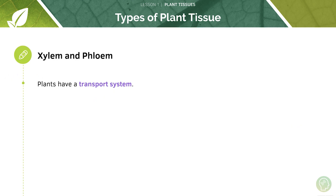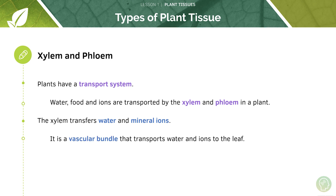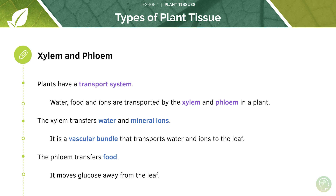Other structures in plant tissue include xylem and phloem, which form the transport system of the plant. Water, food and ions are transported by xylem and phloem. The xylem transfers water and mineral ions — it is a vascular bundle that transports water and ions to the leaf. Whereas the phloem transfers food away from the leaf. So we have two contrasting systems: xylem going towards the leaf, phloem away from the leaf.